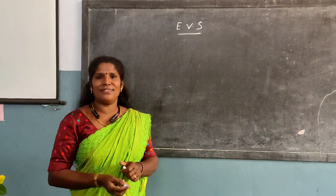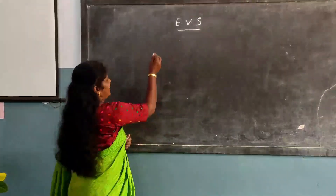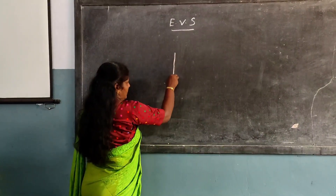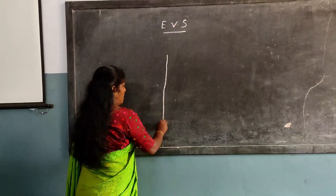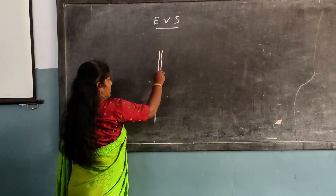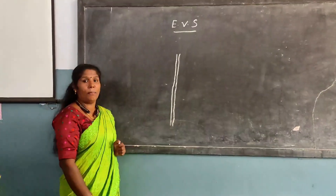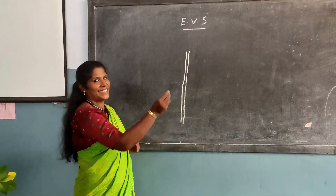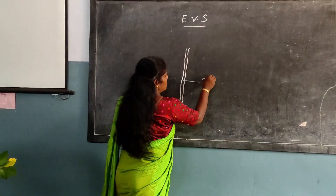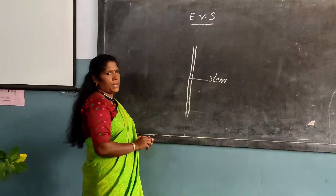So now let's name the parts of the plant. Stem. Stem. Stem is a part of a plant. S-T-E-M. Stem.